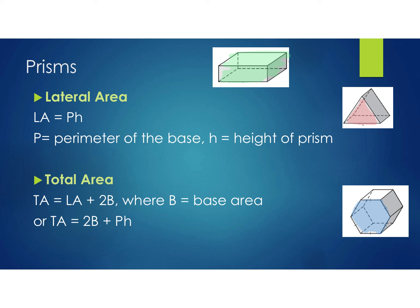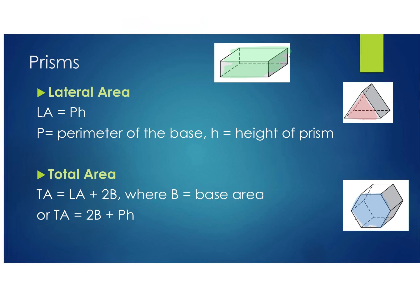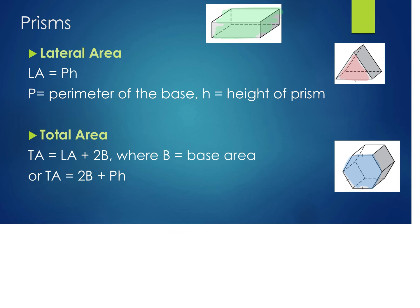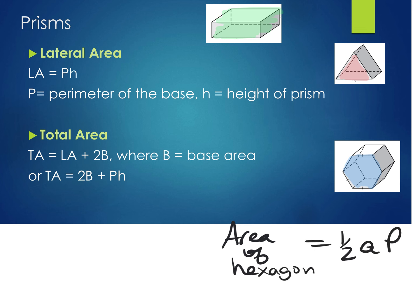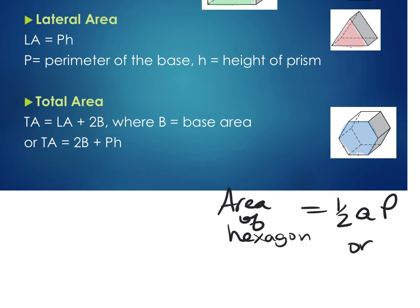If asked to find the total area of a hexagonal prism, you'd go back to section 11.3 and use the formula for area of a hexagon — that's one-half apothem times perimeter, or one-half apothem times number of sides times side length. You'd use that for a hexagon, octagon, or any polygon that's not a rectangle, triangle, or square.